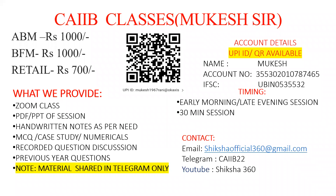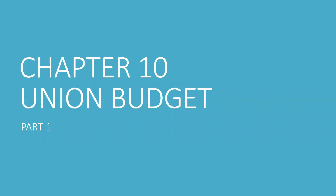Welcome to Shiksha 360. Today we will discuss Chapter 10: Union Budget. This topic we have to cover in two parts from the examination point of view. The type of questions asked from this topic include theoretical-based questions worth one or two marks, or three or five mark case study questions.